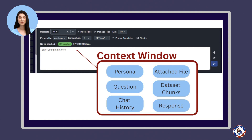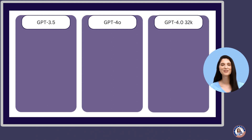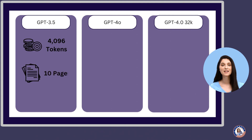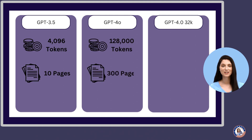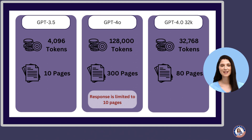However, each model has its own limit in terms of the amount of data it can handle, so let's take a closer look. Let's consider three models: GPT 3.5, GPT 4.0, and GPT 4.0 32K. GPT 3.5 has a limit of 4,096 tokens, or about 10 pages for the entire context window. GPT 4.0 can handle 128,000 tokens, or about 300 pages. However, while GPT 4.0 can process more content, the response is limited to 10 pages. Unlike GPT 4.0 32K, which allows 32,168 tokens, or about 80 pages, for the entire context window, allowing for a longer response.